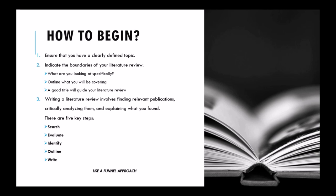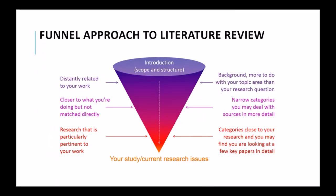A good way to structure your literature review is to use a funnel approach. The funnel method is designed to make sure that all the objectives of the literature review are met automatically. If you apply it properly, your citations and originality, as well as the theory-based context and significance of your work, will all emerge in this process. You start your review from the general to the specific.